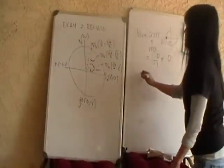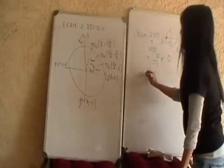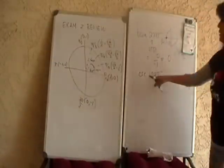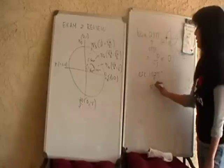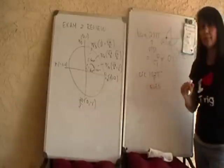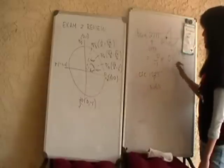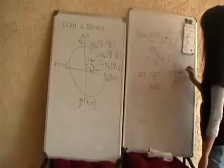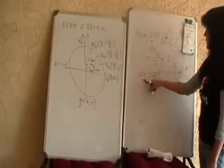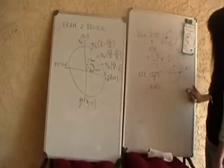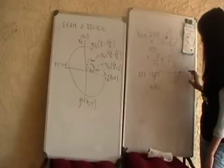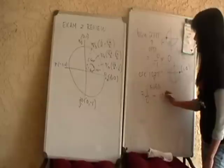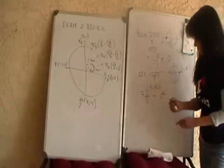Similarly, the cosecant of 102pi: 102 is an even integer, so this is an even multiple of pi, and we land at the point (1, 0). Cosecant is the reciprocal of sine. The y-coordinate is 0, so that's 1 over 0, which is undefined.